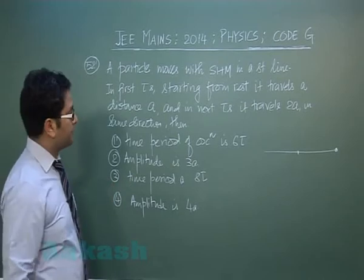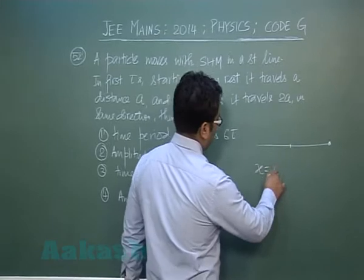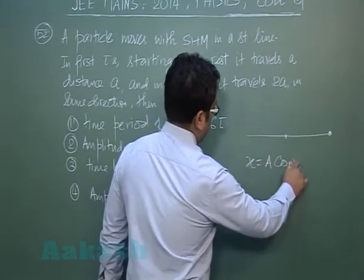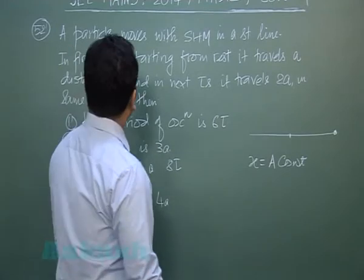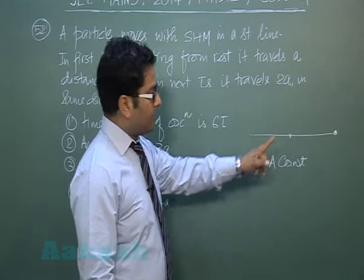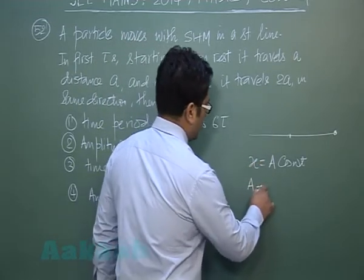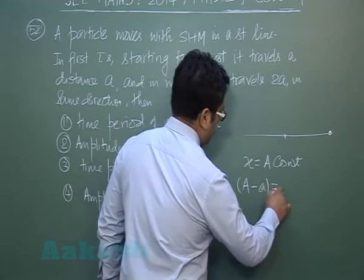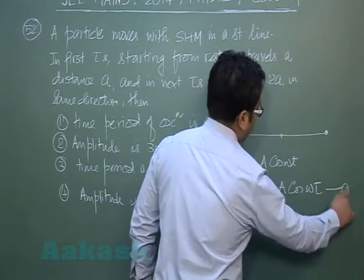Since it begins from the extreme position, x = A cos(ωt). In the first τ seconds it travels distance a, but x is the distance from the origin, so A - a = A cos(ωτ). That's equation number one.